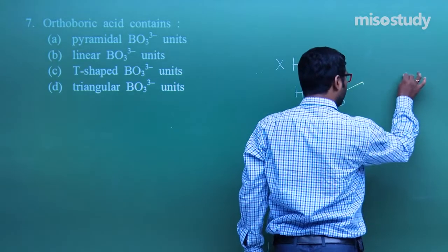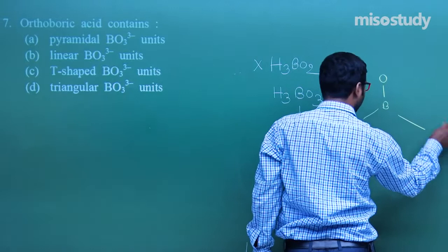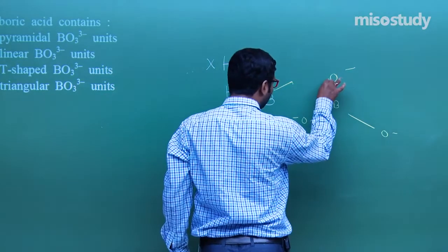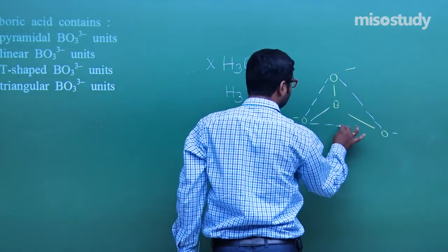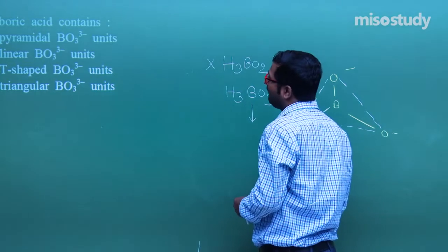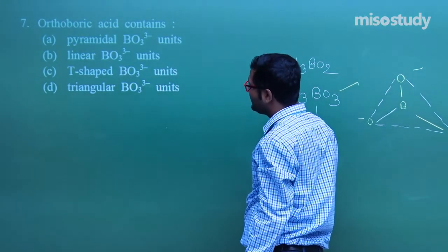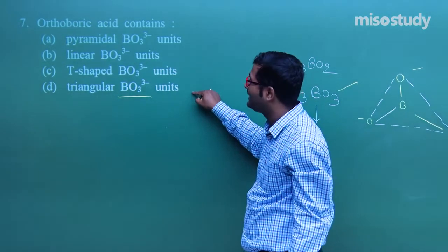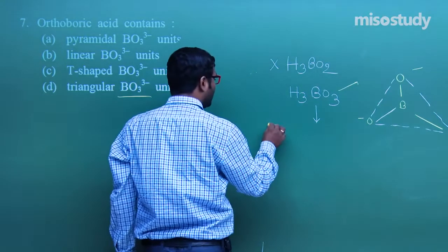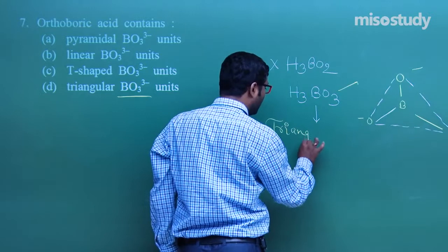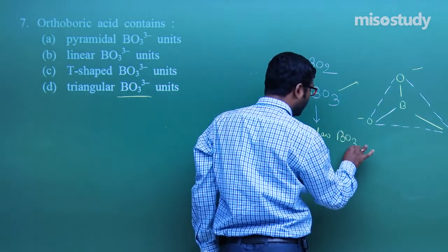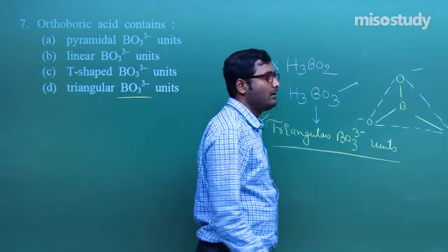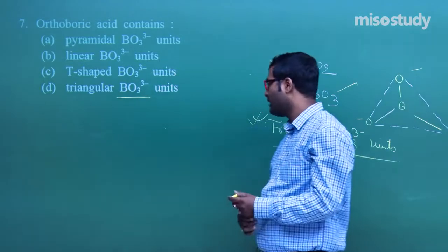The structure looks like a triangle — it is not pyramidal, not linear, not T-shaped. It is triangular BO₃. So the answer is triangular BO₃³⁻ units. This applies when you consider many molecules of H₃BO₃ (orthoboric acid).